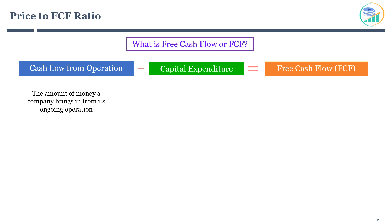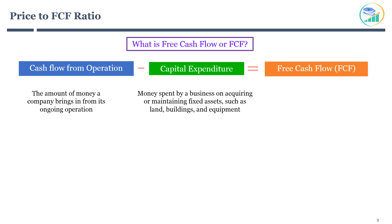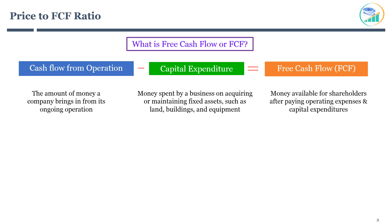Capital expenditure is the money spent by a business on acquiring or maintaining fixed assets, such as land, buildings, and equipment. In other words, free cash flow represents the money available for shareholders after paying its operating expenses and capital expenditures.